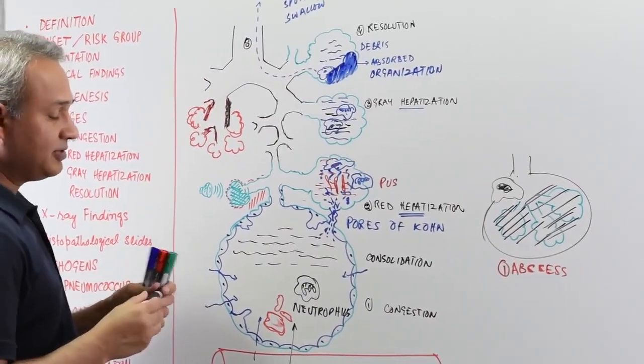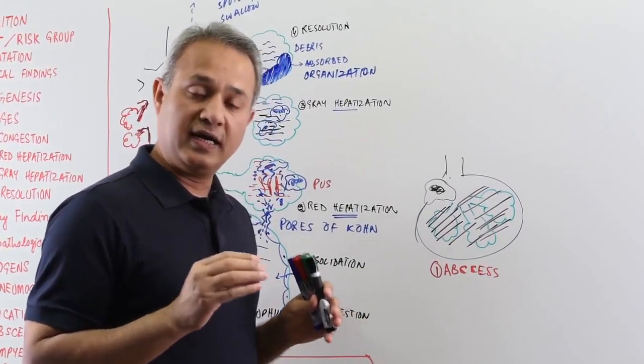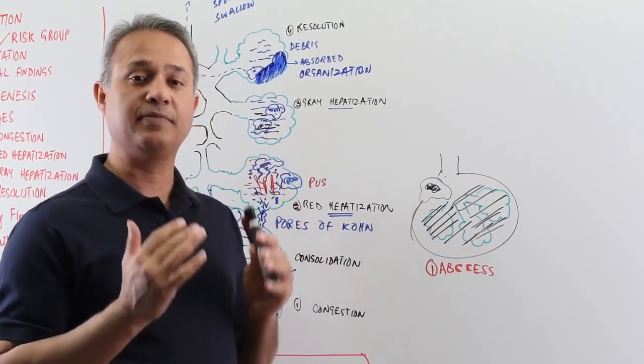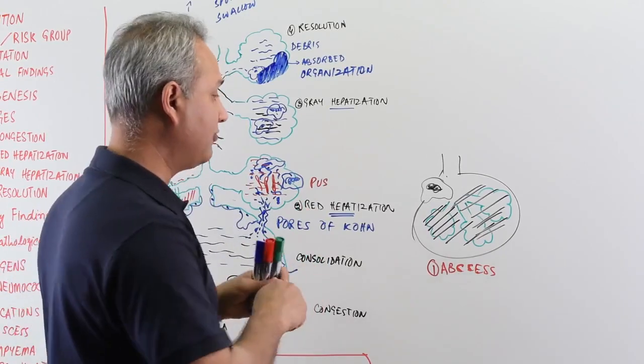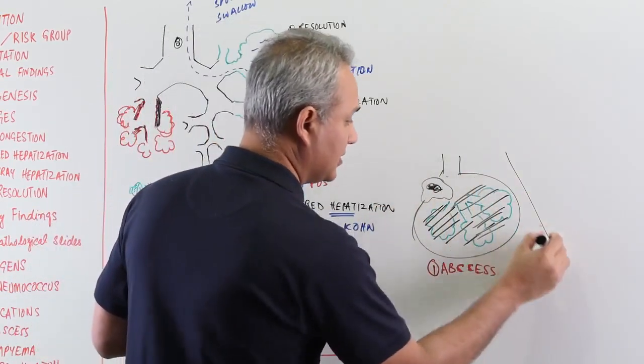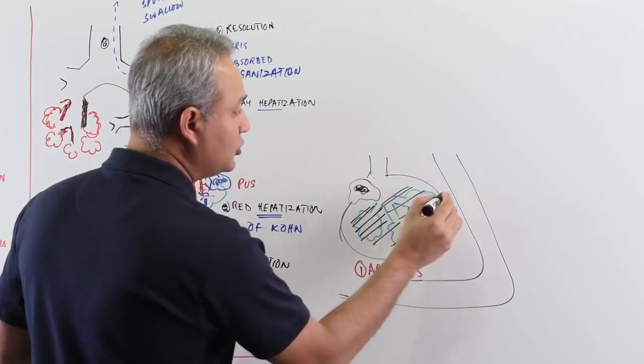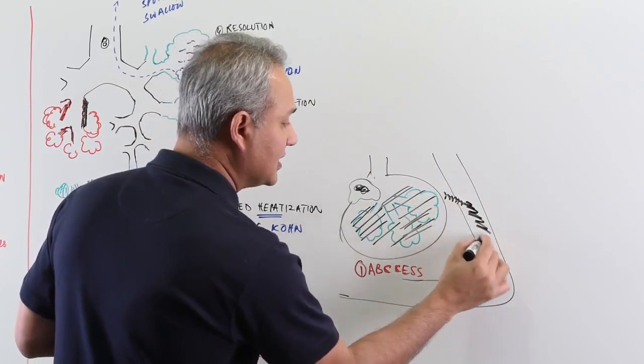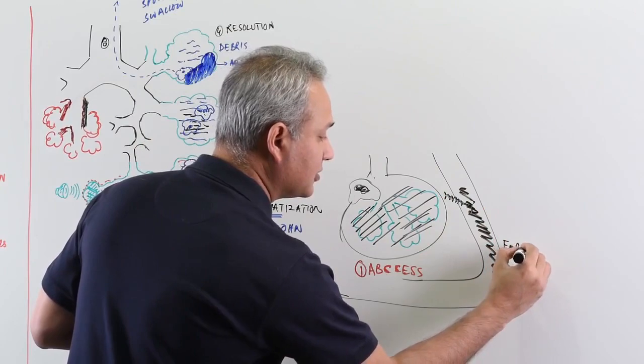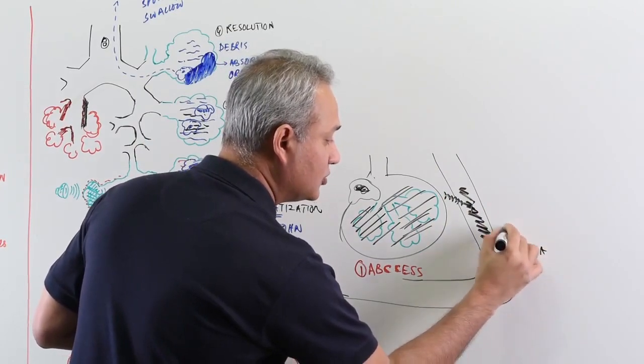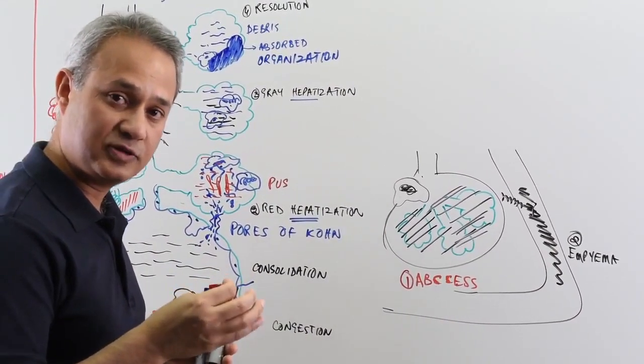Then we can have empyema. What happens is the lobar pneumonia has a higher chance of causing empyema or involving pleura. So once the pleura is involved as well, remember there is visceral pleura and parietal pleura. So once the pleura is involved as well, then it is possible that there is empyema that would develop. So that is two. Pleural consolidation can occur as well. Pleural plaques can occur as well.